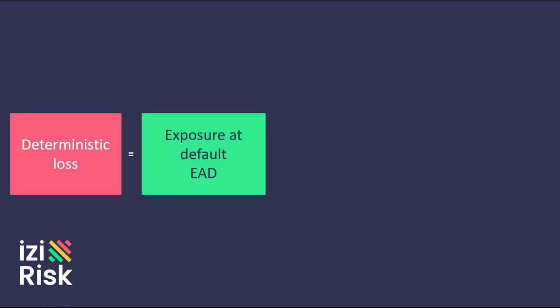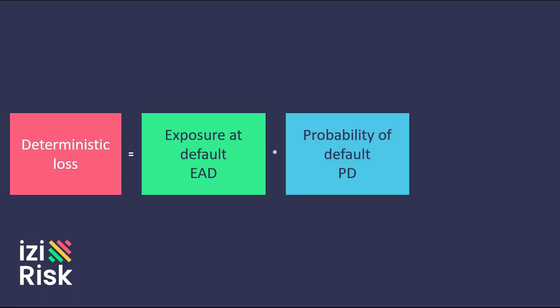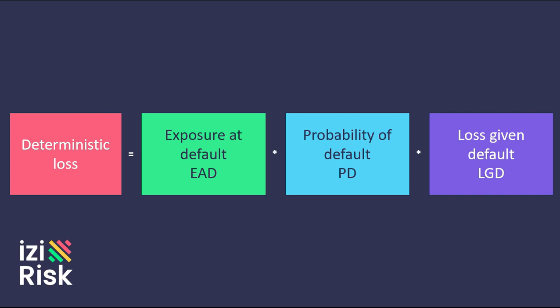Deterministically calculating default loss consists of the multiplication of three factors: the balance of the operation — that is, the exposure at default — the probability of default, and the loss given default. When these three factors are multiplied, the default loss is deterministically obtained.